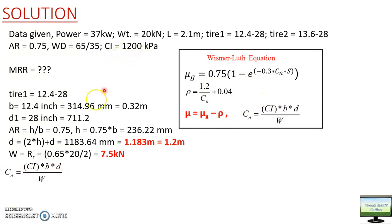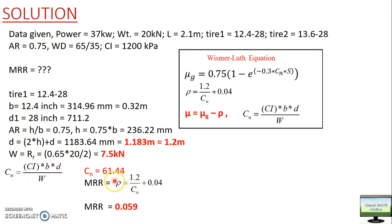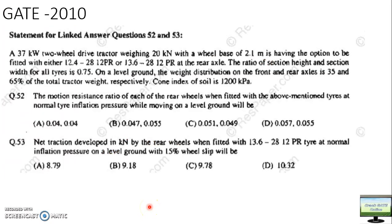Calculate the CN number using CI × B × D divided by W, where CI is the cone index already given. After calculating CN, use the motion resistance ratio equation to get approximately 0.059. The closest correct answer is 0.057 for the first tire. Small differences depend on the number of decimal places used. Option D is the correct answer. You can similarly check for the 13.6-28 tire.